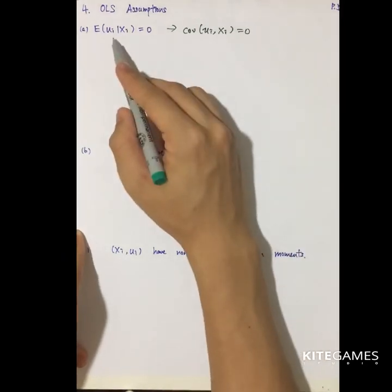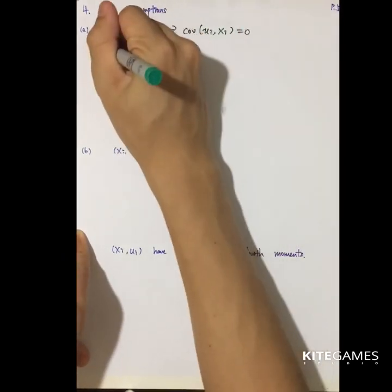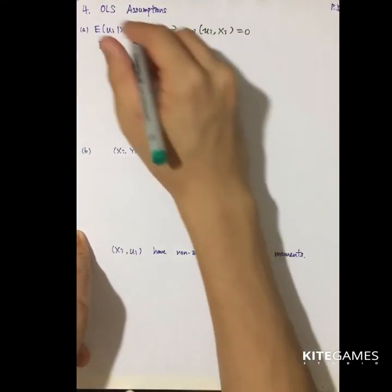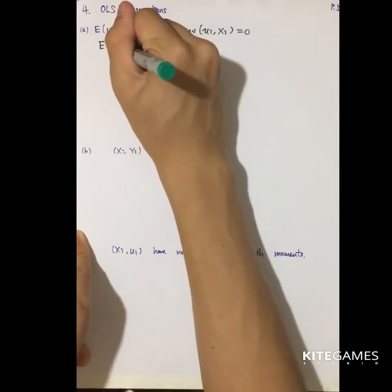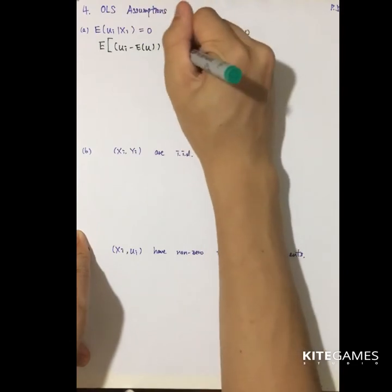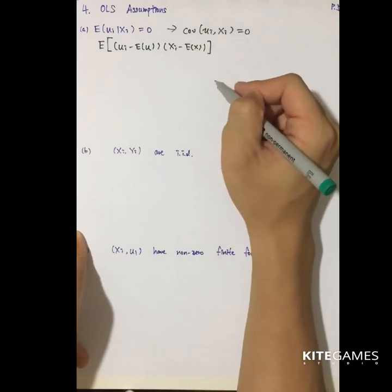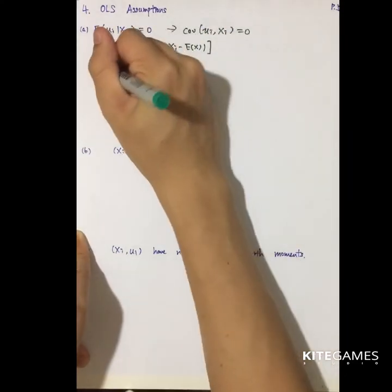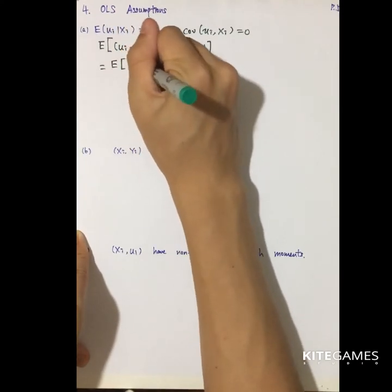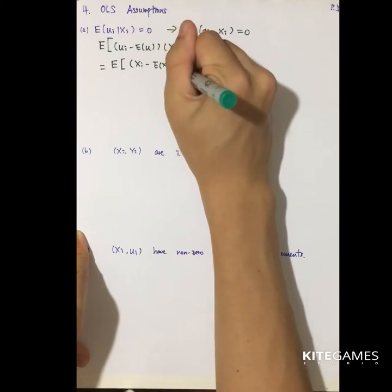So why does E[u|x_i]=0 imply that the covariance equals zero? Let's prove it. Try to expand the covariance formula: this is equal to E[(u_i minus ū)(x_i minus E[x])]. This is the covariance formula. Then this equals the expected value of (x_i minus E[x]) times u_i.